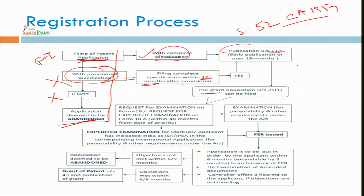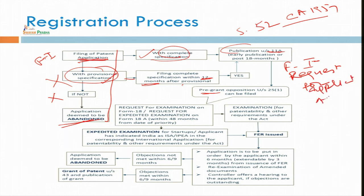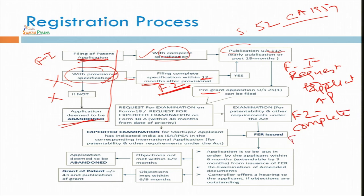There are four important forms. Form 1 is for the request/application for grant of patent. Form 2 (F2) is for filing the complete specification. Form 5 is for the declaration — the inventor has to give a declaration relating to that. Form 18 is for the request for examination.